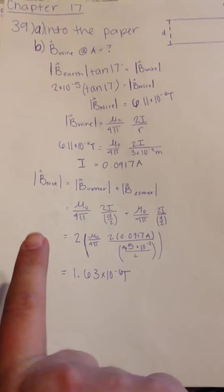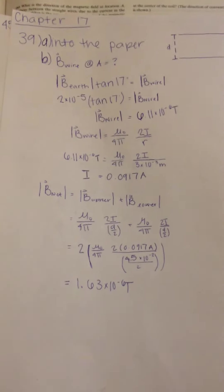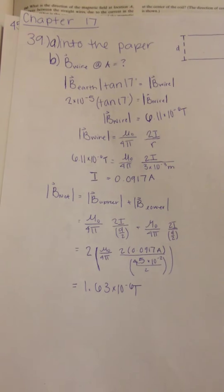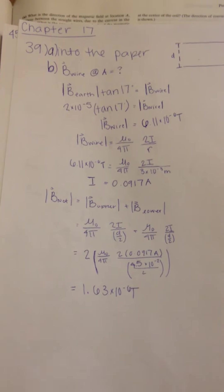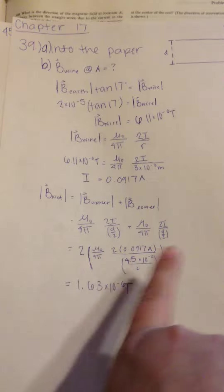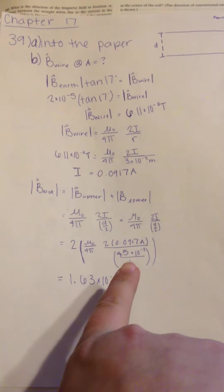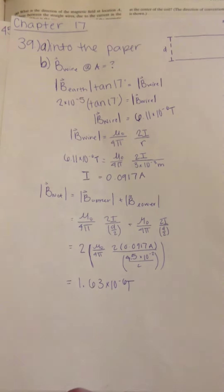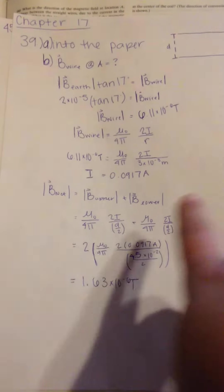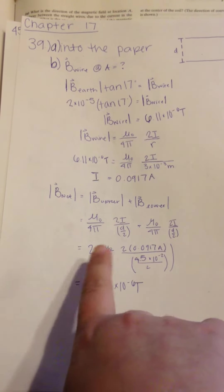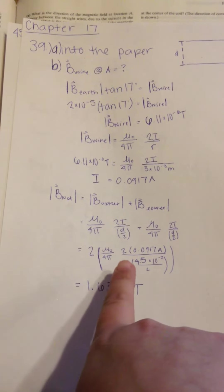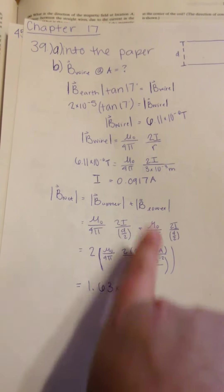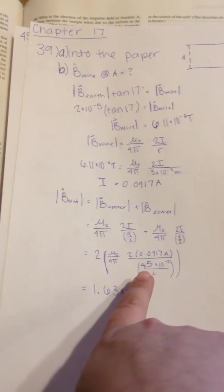And then from there, we're going to find B net, which is going to be adding both of them up. You're going to add the magnetic field of the upper and the lower together. So that's what we're doing here. And they are the same, so it's just two times both of them. And we're going to plug in our numbers. We know that it's two times this mu naught over 4 pi, that's constant, two times I, which we solved for up there. Plug that in there.